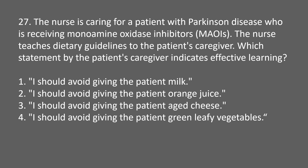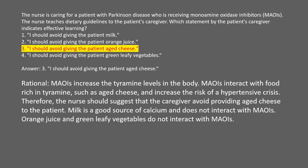The nurse is caring for a patient with Parkinson's disease who is receiving monoamine oxidase inhibitors (MAOIs). The nurse teaches dietary guidelines to the patient's caregiver. Which statement indicates effective learning? Answer: 3. I should avoid giving the patient aged cheese. Rational: MAOIs increase tyramine levels in the body and interact with tyramine-rich foods such as aged cheese, increasing the risk of hypertensive crisis. Milk, orange juice, and green leafy vegetables do not interact with MAOIs.